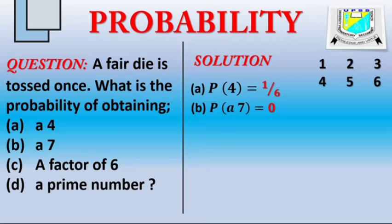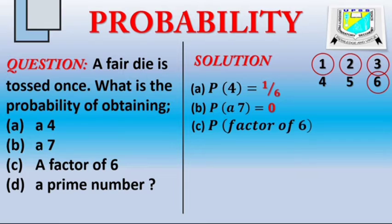How do I get a factor of 6? The factors of 6 are 1, 2, 3, and 6. And if I do my counting, there are 4 numbers out of 6, so I simply write it as 4 over 6. I can break it down to give me 2 over 3.